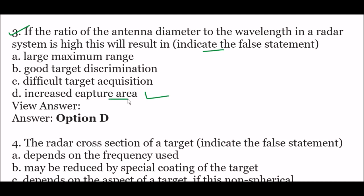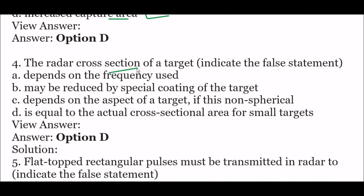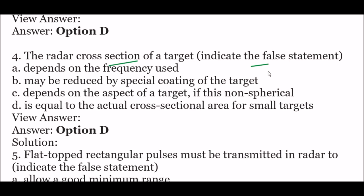Next question: the radar cross-section of a target — indicate the false statement. Option D: is equal to the actual cross-sectional area for small targets. The right answer is option D. The radar cross-section of a target — the false statement is that it is equal to the actual cross-sectional area for small targets.